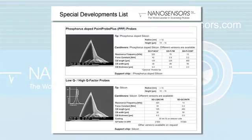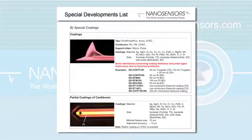On the next page, you can find cantilevers with a very low phosphorus doping instead of the standard highly antimony doped silicon, and probes with a very high or with a very low Q factor.